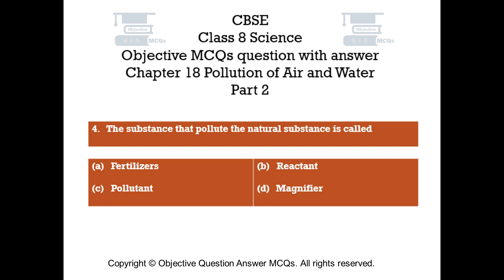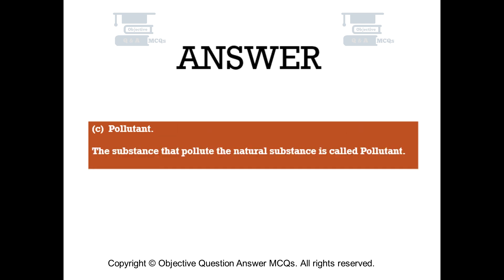Question number 4. The substance that pollutes the natural environment is called: Option A: Fertilizers. Option B: Reactant. Option C: Pollutant. Option D: Magnifier. The right answer is Option C — Pollutant. The substance that pollutes the natural environment is called a pollutant.